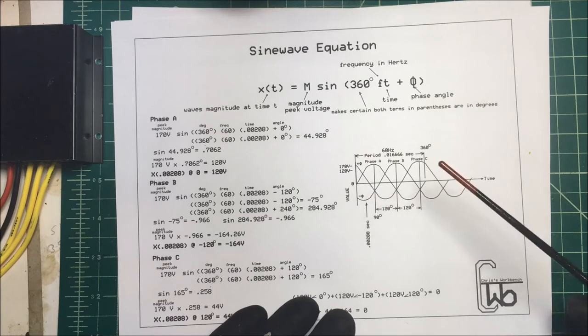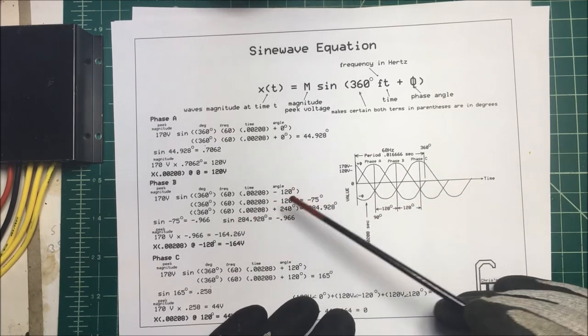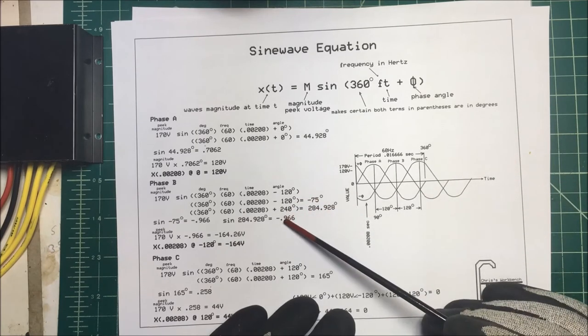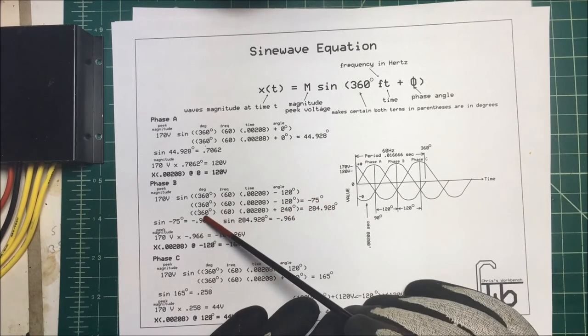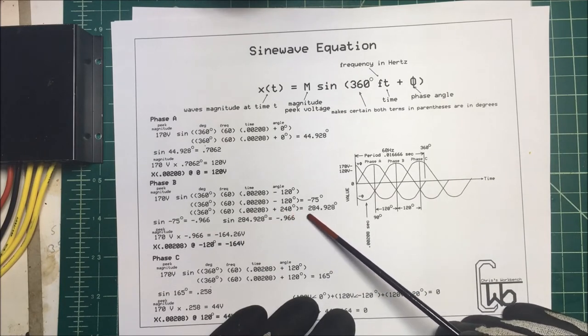That's right down here, that's going to be minus 164 volts. Now instead of saying we're lagging by 120 degrees, we can be ahead by 240 degrees.